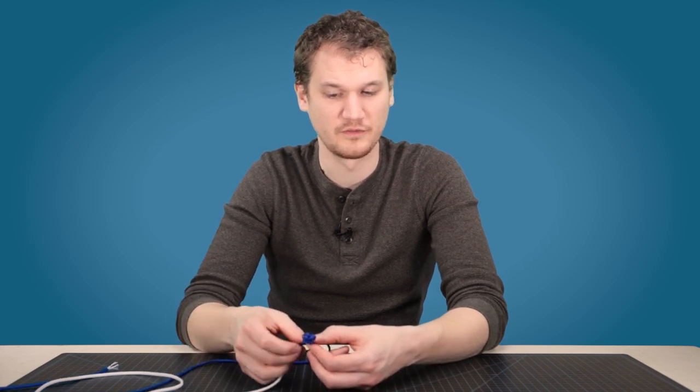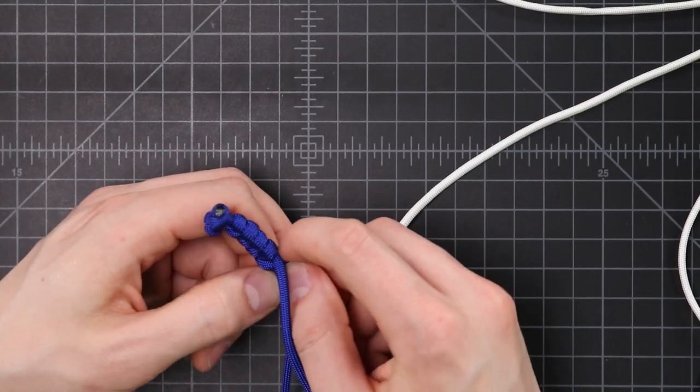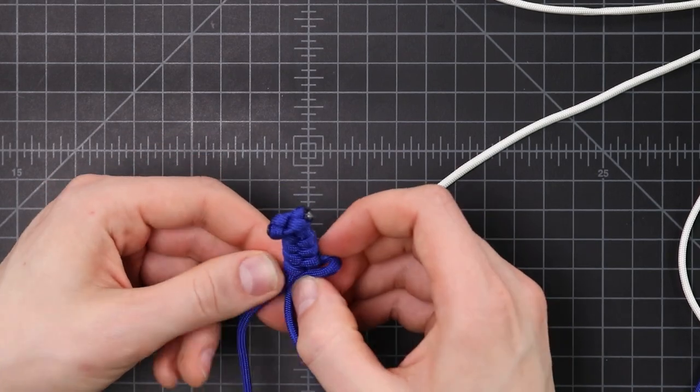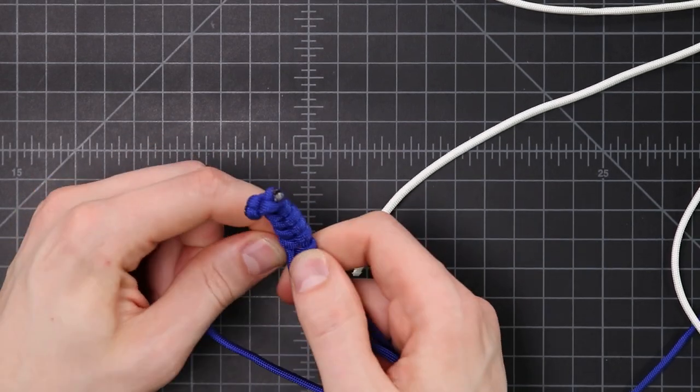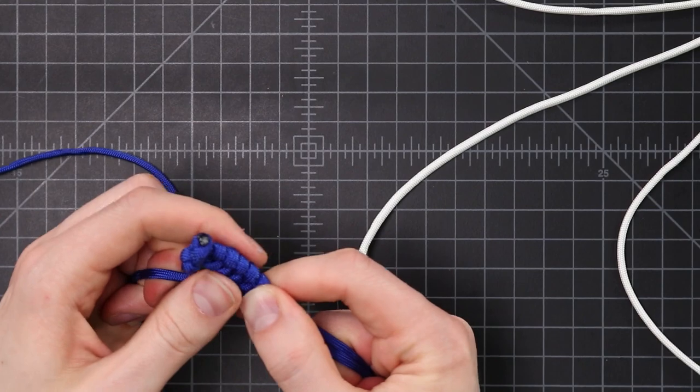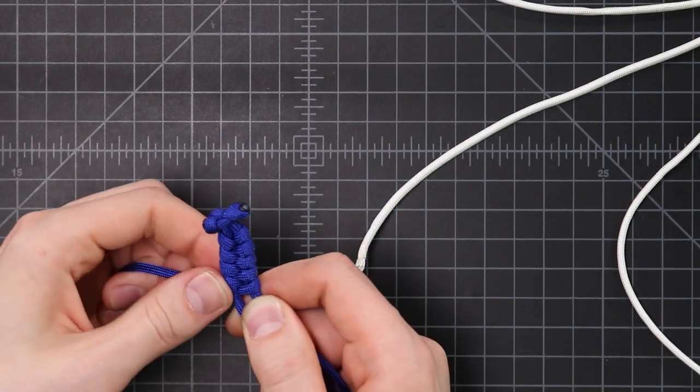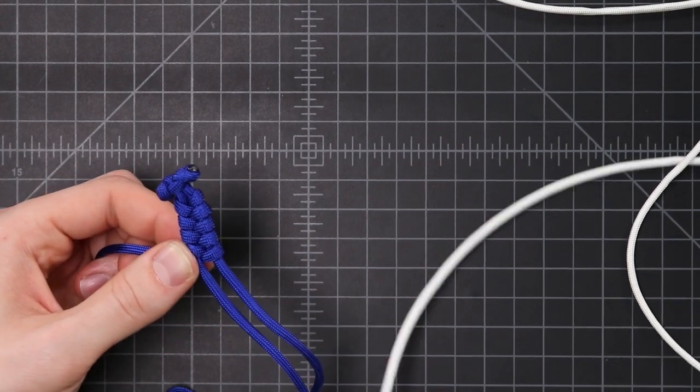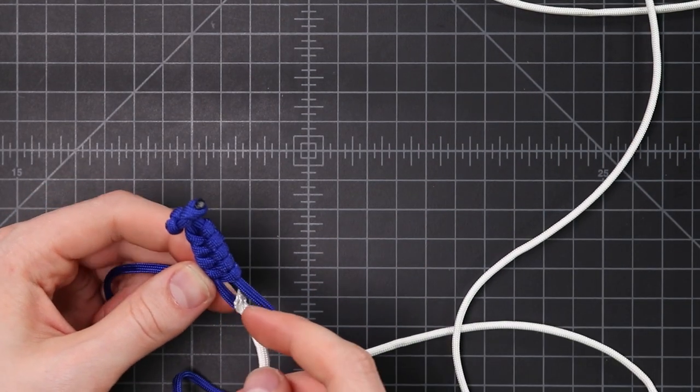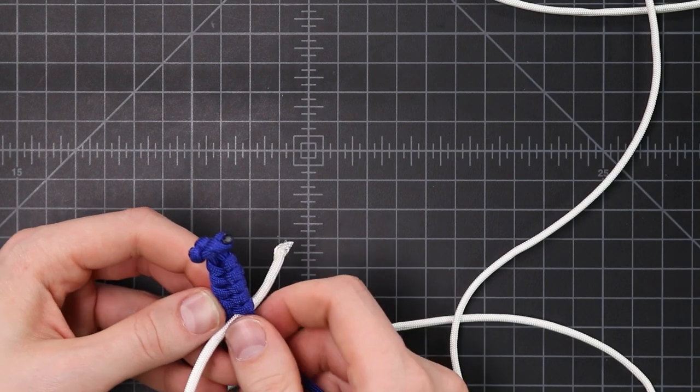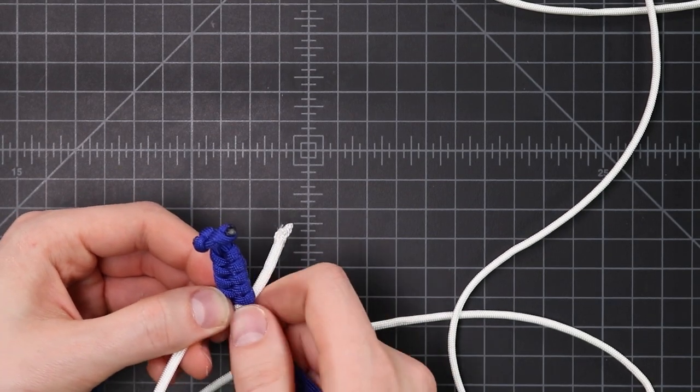So I've got this cord weaving back and forth as one does with a fishtail bracelet, and here I'd like to add some white, change colors to white. So without cutting this cord I'm just gonna take my white and put the end of it down through the middle.